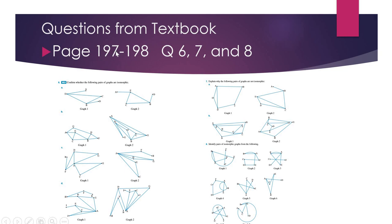Here are the questions in the textbook you need to do: page 197 to 198, questions six, seven, and eight. You'll need to set up that Excel spreadsheet table to check that the edges are the same, the degrees are the same, and the exact connections are the same for both graphs in each question. The last question is quite difficult — you need to guess which graphs might be the same. A useful hint: if a graph doesn't connect to vertex F and another does, they can't be isomorphic. Focus on the four that all have F connections.